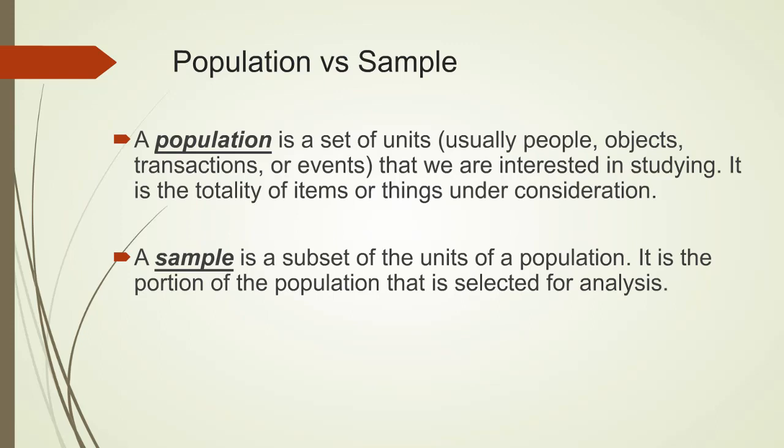I would like you to understand how several of our vocabulary terms relate to each other. The first pair is population and sample. A population is a set of units, usually people, objects, transactions, or events that we are interested in studying. It is the totality of items or things under consideration. A sample is a subset of units of a population. It is the portion of the population that is selected for analysis.